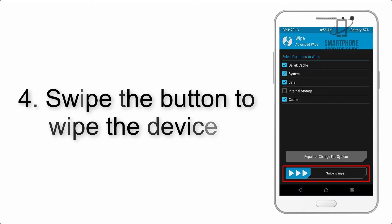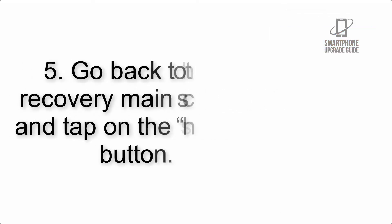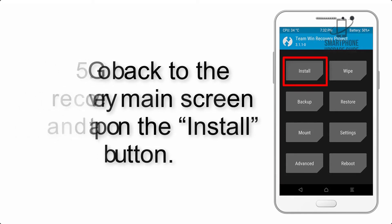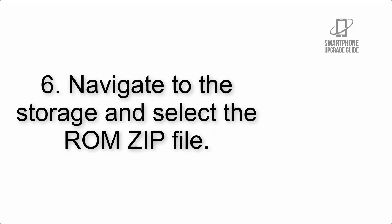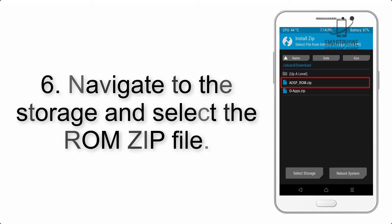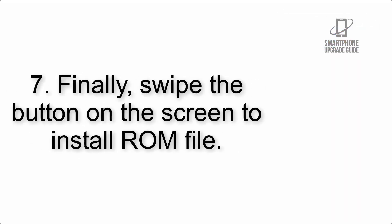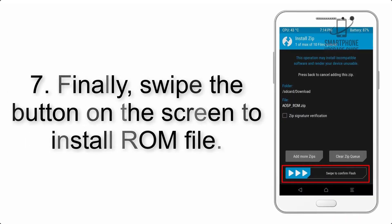Step 4: Swipe the button to wipe the device. Step 5: Go back to the recovery main screen and tap on the Install button. Step 6: Navigate to the storage and select the ROM zip file.